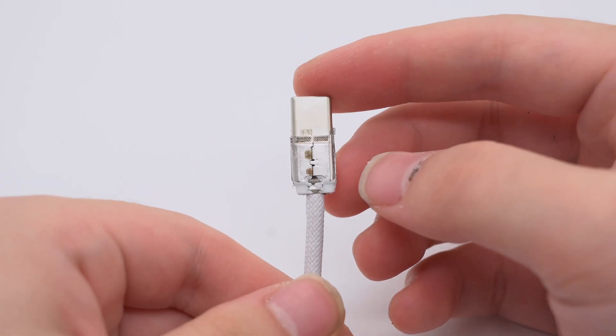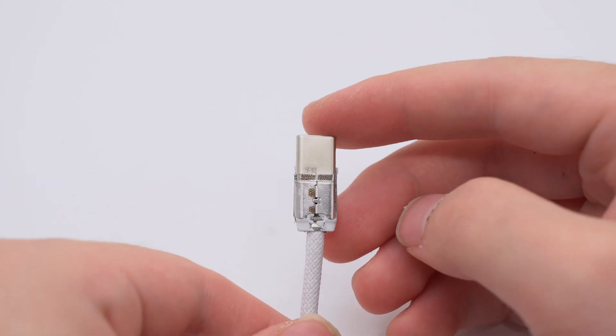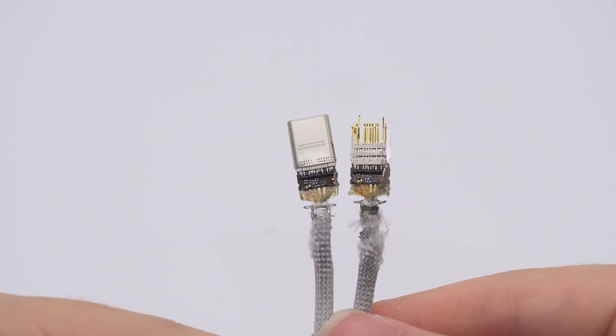The other USB-C connector has the exact same layout. It also has enough space to solder an e-marker chip on the back.